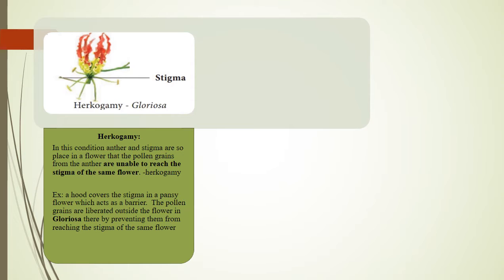Herkogamy: In this condition, the anther and stigma are so placed in a flower that pollen grains from the anther are unable to reach the stigma of the same flower — hence the term herkogamy. For example, a hood covers the stigma in a pansy flower which acts as a barrier. In Gloriosa, the pollen grains are liberated outside the flower, thereby preventing them from reaching the stigma of the same flower.